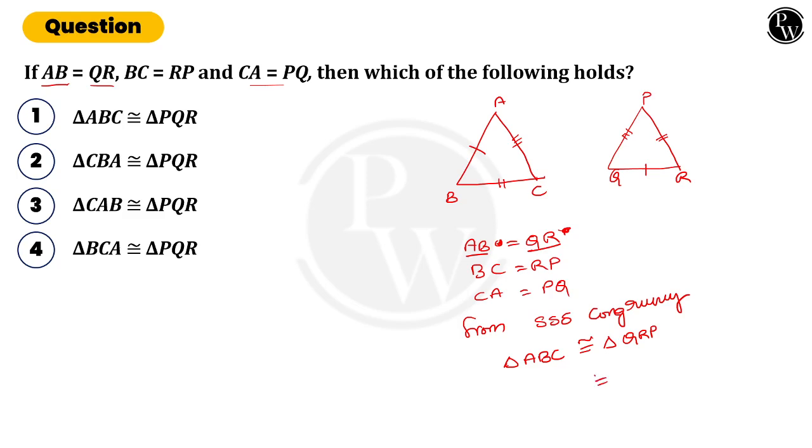So if suppose I write it in the form of triangle PQR, that means P came first, that means the triangle will become C will become first, it will be CAB. Triangle CAB is congruent to triangle PQR, option 3 is the right answer. Thank you.